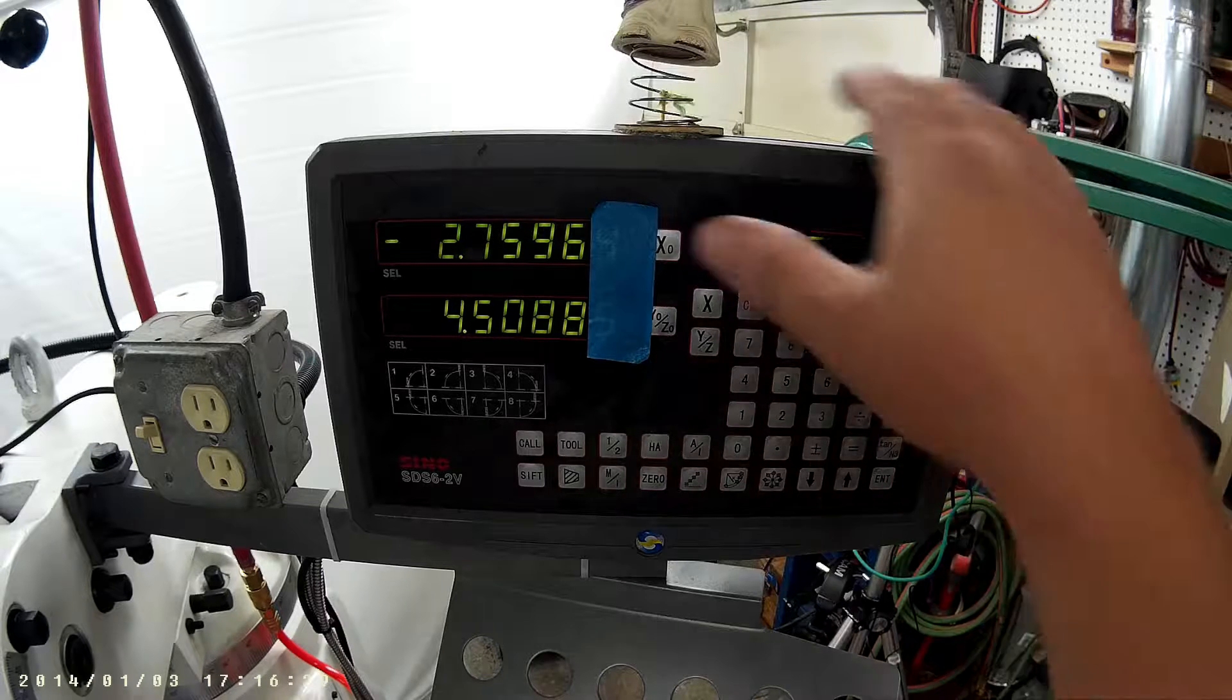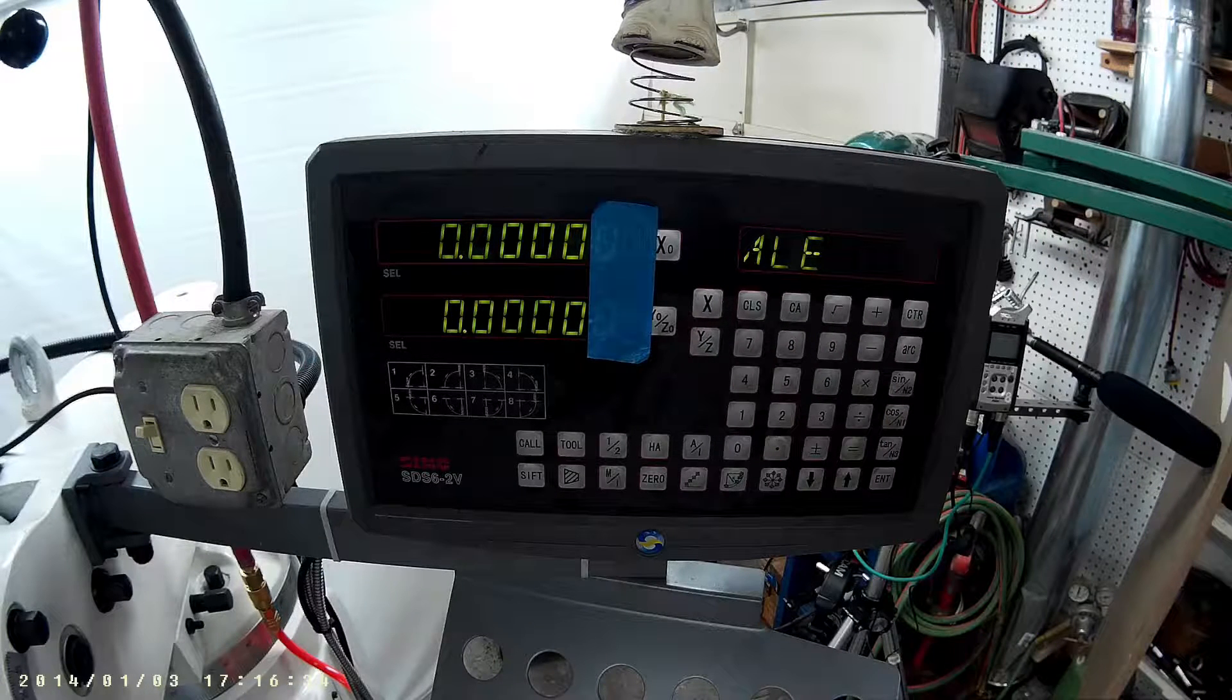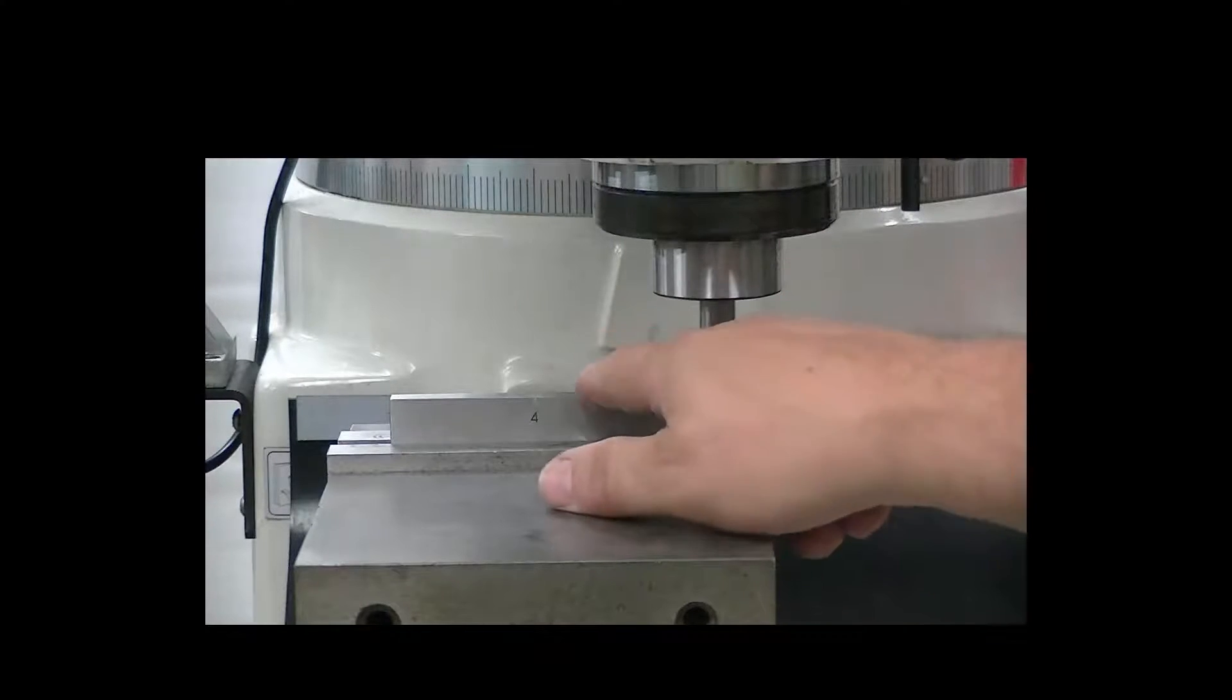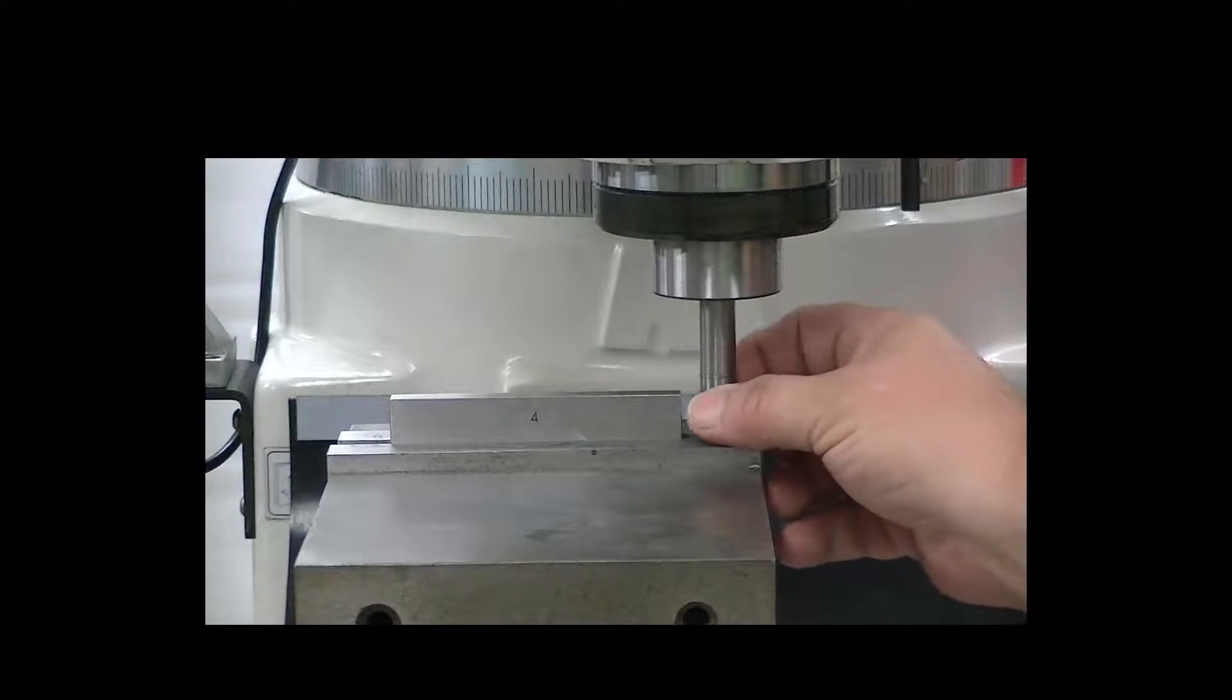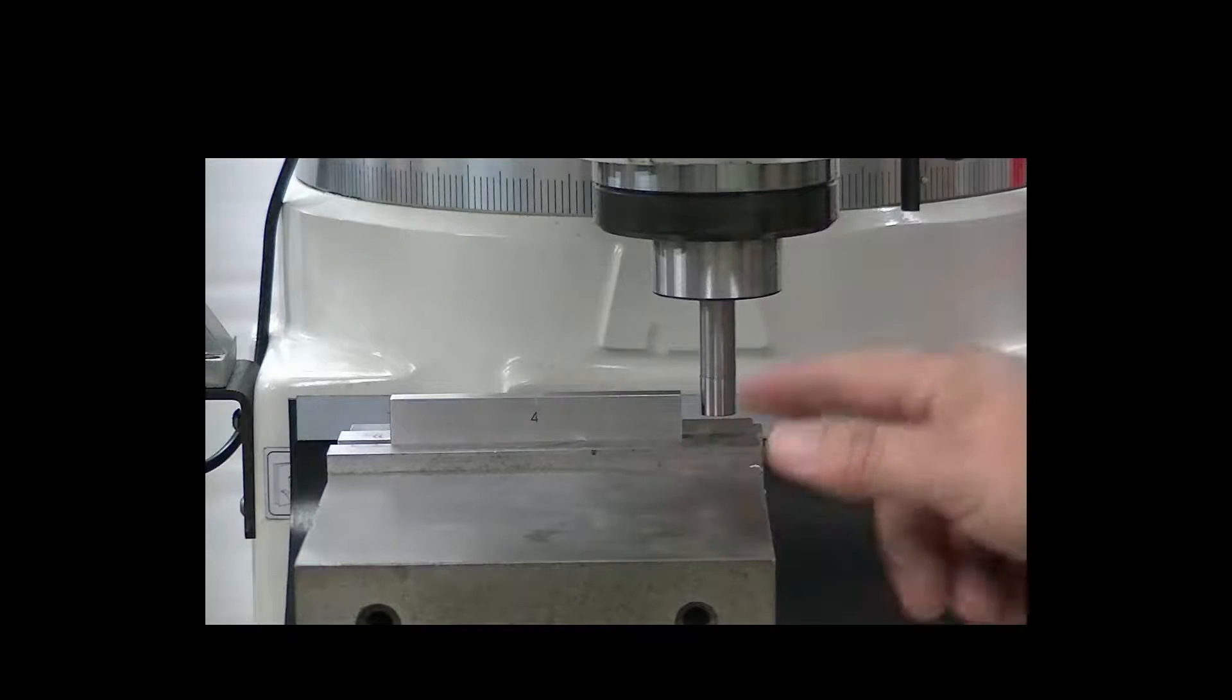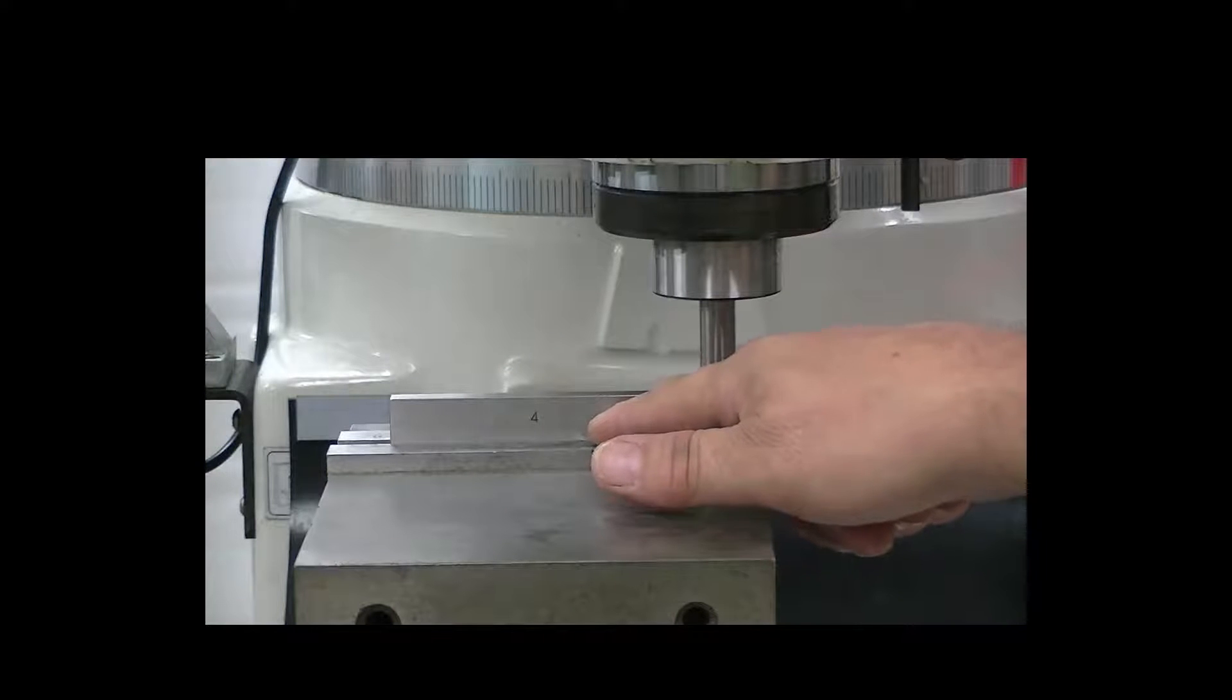We did a number of tests on the digital readout. The most important of those was how repeatable is this digital readout. Now in order to determine that, we took a brand new 4 inch gauge block and a very, very precise Brown and Sharpe half inch edge finder. And there were two of us here. My friend was here for that test.